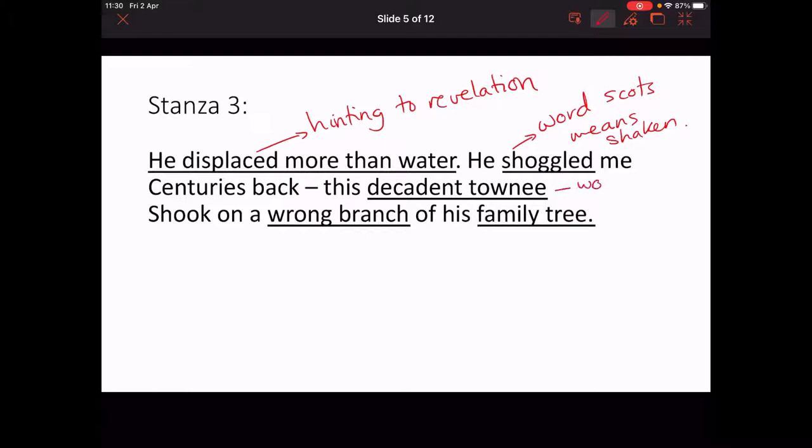Centuries back, this decadent townie word choice. He's spoiled and over-civilized. Shook on the wrong branch of his family tree. So it's important to note that he says wrong branch. He's on the wrong branch. So sort of a mistake in evolution. He views himself as the worst choice between him and the shark of his family tree.